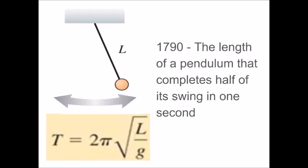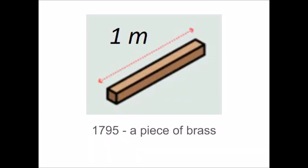Another way was to use a pendulum, and that method was used in the 1790s. The length of a meter was defined as the length of a pendulum that completes half of its swing in one second. Using the period equation for a pendulum, if the length is 1 meter, 1 divided by 9.8, take the square root and multiply by 2π — that gives about 2 seconds. But the problem is that the acceleration due to gravity cannot be precisely known in advance, so instead they decided to make a meter stick. That brass meter stick was the definition of a meter in 1795.